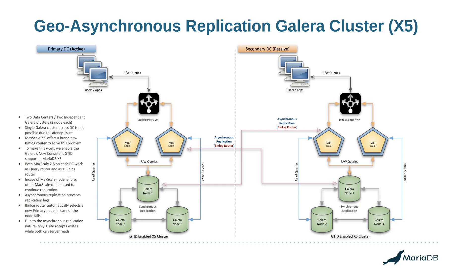The downside of this setup is that because we use asynchronous replication to synchronize two independent Galera clusters, we cannot use both sides in active mode simultaneously — meaning we cannot submit transactions from both sides at once. This is an active/passive setup. When one data center goes down, we switch over to the other side and start using that cluster actively, and once the original site comes back online, the replication will re-sync the data automatically.